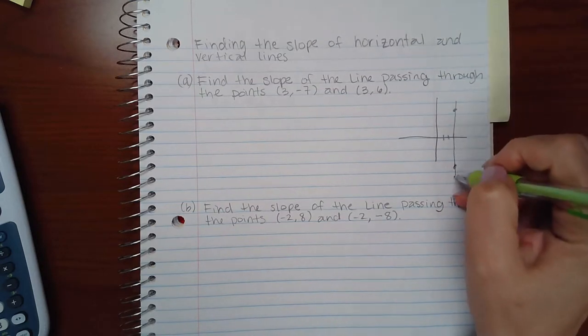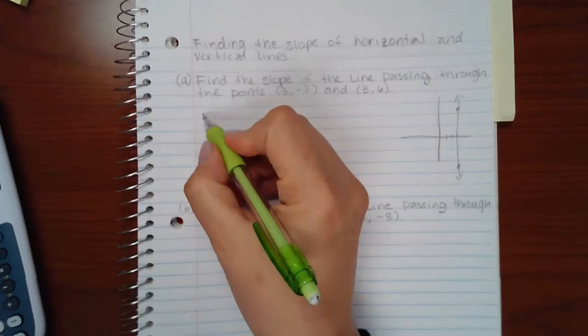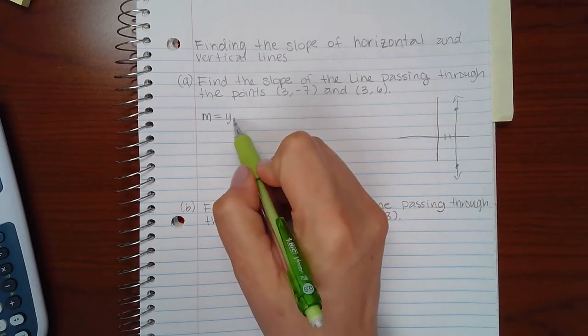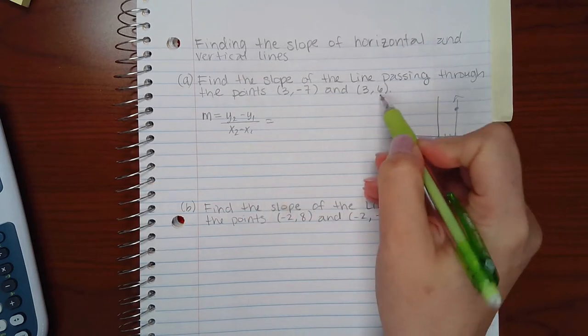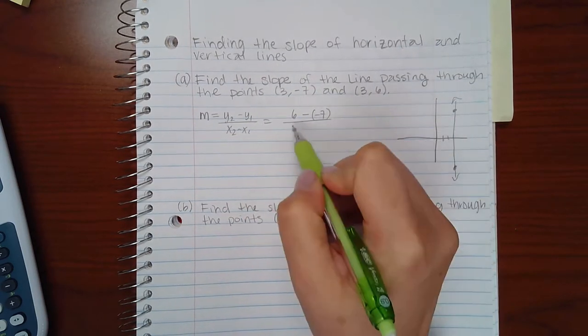If you connect the dots you obviously have a vertical line in part a. Now if you do the slope as normal with the slope formula, we have the second y value minus the first y value over the second x value minus the first x value.